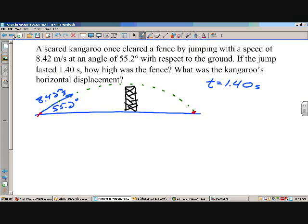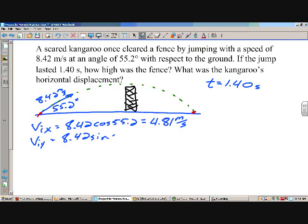We've got to break it up into x and y. There is no x or y in time. Our initial velocity in the x: 8.42 times the cosine of 55.2, which is 4.81 meters per second. Initial velocity in the y is 8.42 times the sine of 55.2, which works out to be 6.91 meters per second. At this point we want to know displacement in the y.